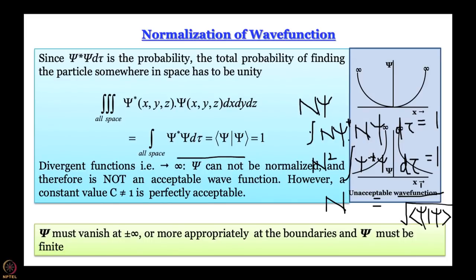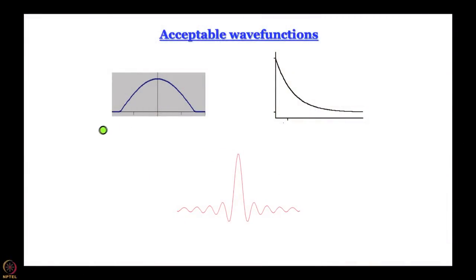Here are some examples of acceptable wave functions. The first becomes zero at long distances on both sides, so you can always integrate it and, by multiplying by an appropriate constant, ensure the area under the curve is 1. The second function becomes zero asymptotically, so it is still integrable and you can get a normalization constant for which the area is 1.